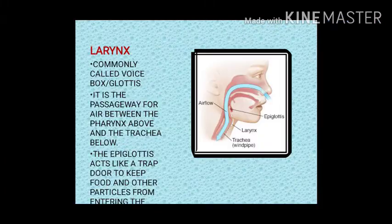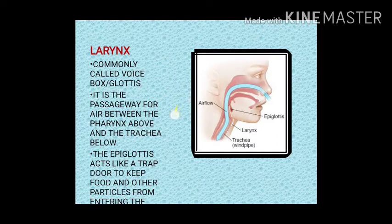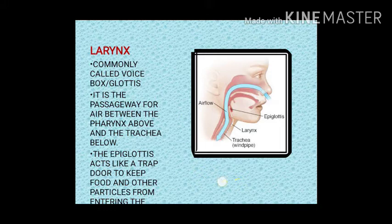Moving to the next part — the larynx. It is commonly called the voice box or glottis. It is the passage for air between the pharynx and the trachea. The epiglottis acts like a trap door to keep food and other particles from entering the larynx.